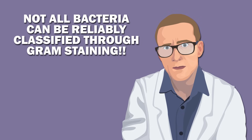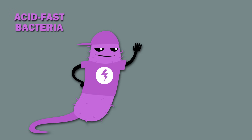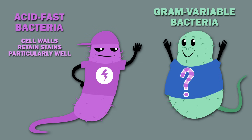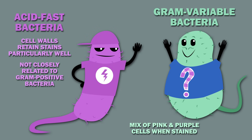Not all bacteria can be reliably classified through gram staining. Acid-fast bacteria and gram-variable bacteria, for example, do not respond to gram staining. Acid-fast bacteria are bacteria whose cell walls retain stains particularly well. Although they aren't closely related to gram-positive bacteria, they can appear purple after the gram stain test. Gram-variable bacteria show a mix of pink and purple cells when stained.